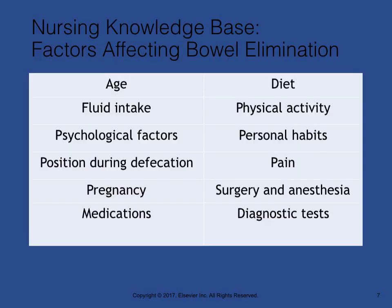Many factors affect bowel elimination. Knowledge of these factors helps anticipate measures required to maintain a normal elimination pattern. Age influences bowel elimination — infants have a smaller stomach capacity, less secretion of digestive enzymes, and more rapid intestinal peristalsis. In contrast, older adults may have decreased chewing ability, causing peristalsis to decline and esophageal emptying to slow. Regular daily food intake helps maintain a regular pattern of peristalsis. Fiber in the diet provides bulk in fecal material. A fluid intake of 3 liters per day for men and 2.2 liters per day for women is recommended. Fluid liquefies intestinal contents, creating a larger, softer stool mass.